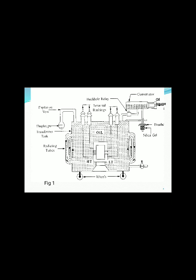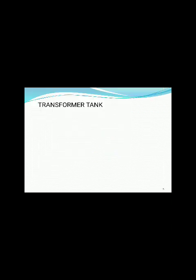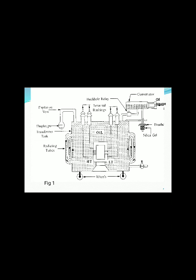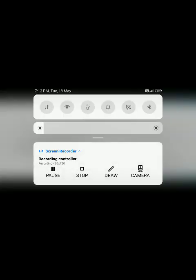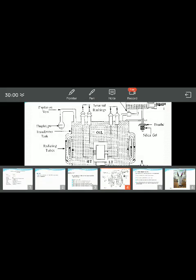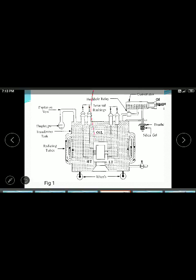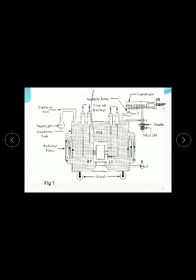This is the transformer diagram. This is the oil level - up to this one is the oil level. These are the terminals - input and output terminals. These are the bushings and these are the terminals. The conductor routes are connected to these terminals, and here also are bushings. This is Buchholz Relay - also called Buckle's Relay or Bichlow Relay.